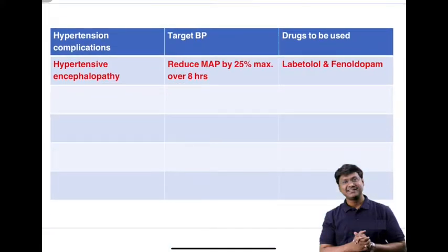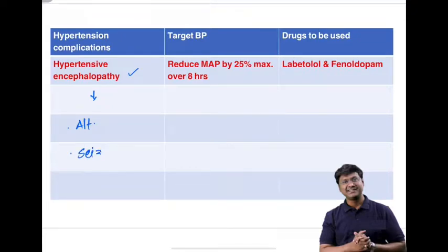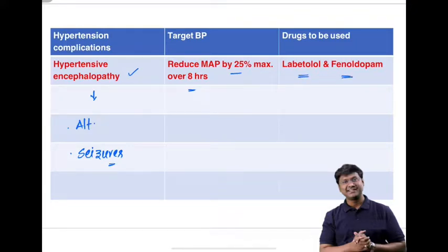Next, consider hypertensive encephalopathy. These patients present with altered sensorium and seizures. In these individuals, the target blood pressure requires reducing the mean arterial pressure by 25% maximum over 8 hours. The drugs to be used are labetalol and phenoldopam to reduce the blood pressure.